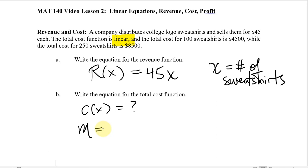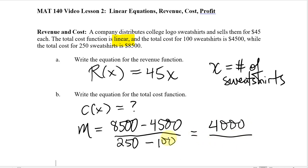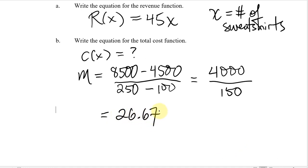We'll call the slope M — this is really the cost per shirt. We're given 100 shirts is $4,500 and 250 sweatshirts is $8,500. We can find the cost per shirt by finding rise over run. So $8,500 minus $4,500 gives a difference of $4,000 over an interval of 150 shirts — that's $26.67 per shirt, rounding to the nearest penny.